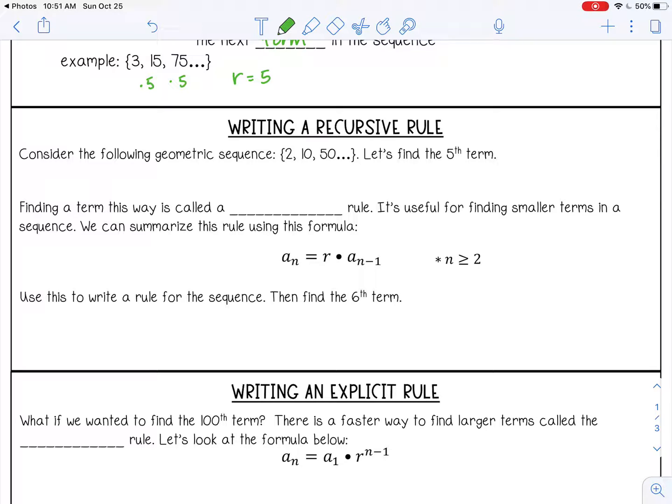So first of all, we have to figure out what are we multiplying by? What's our r? So 2 times 5 gives me 10. 10 times 5 gives me 50. So this is our first term, our second term, our third term. So let's make a little chart over here. So first term, second term, third, fourth, and we want the fifth. So we know 2, 10, 50. So we need to multiply by 5. That would be 250. And then multiply by 5 again. That's 1250.